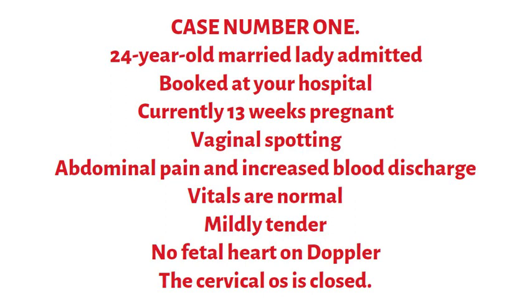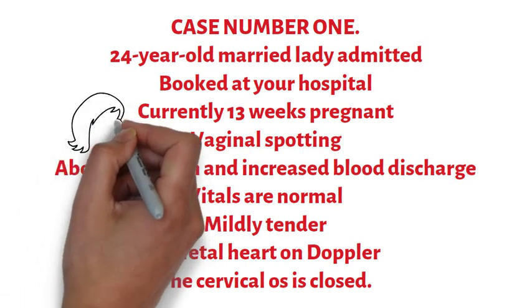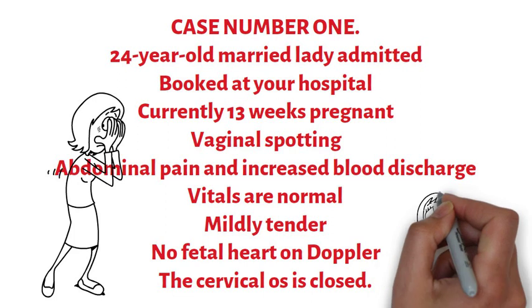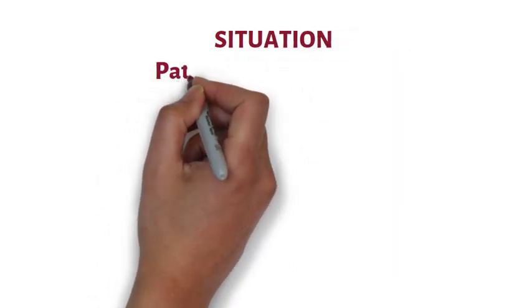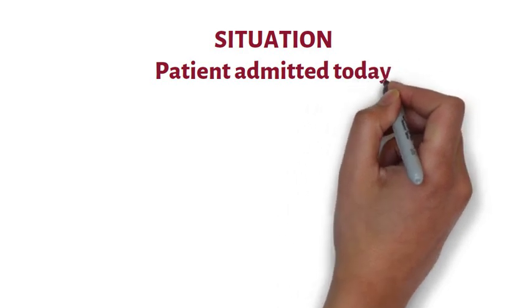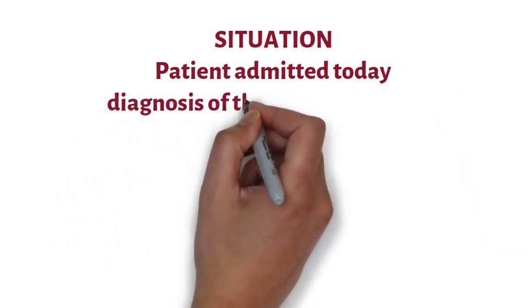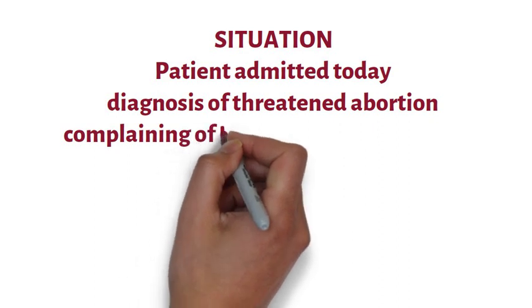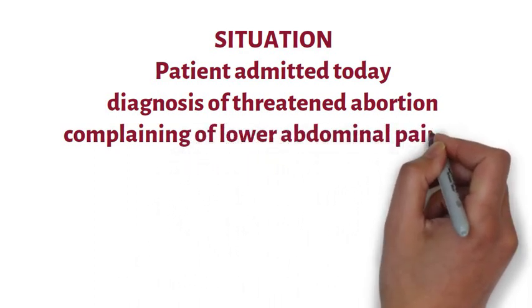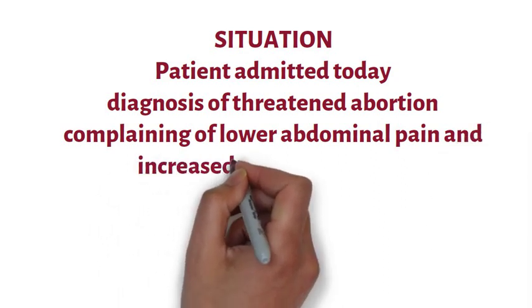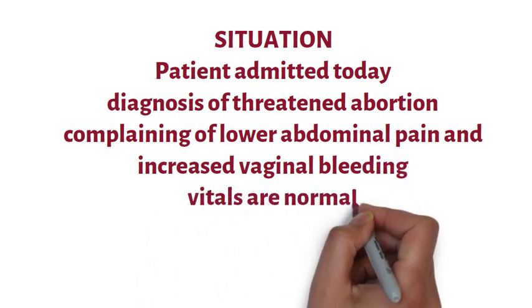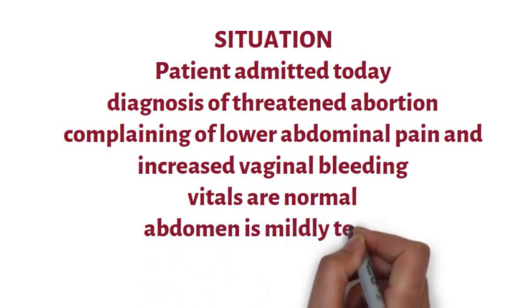The patient is agitated and wants to see her husband. You must communicate information about the patient to her consultant. As far as the Situation is concerned, you will inform the consultant that you are calling about the patient, your name, designation, and the name of the patient. You must also inform about the diagnosis with which the patient was admitted — threatened abortion — and that she is now complaining of lower abdominal pain and increased vaginal bleeding.